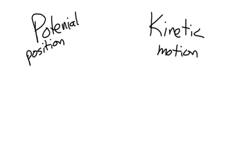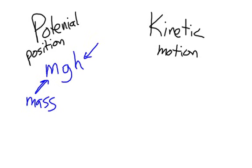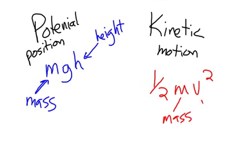And we have equations for each of these. Potential energy is mgh where m is mass, g is gravitational acceleration, and h is the height. And then kinetic energy is one half mv squared where m is mass and v is the velocity of the object.